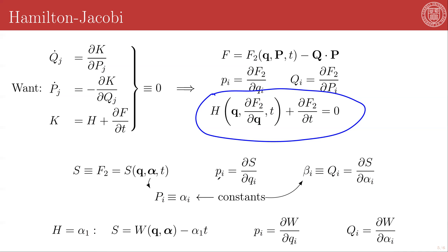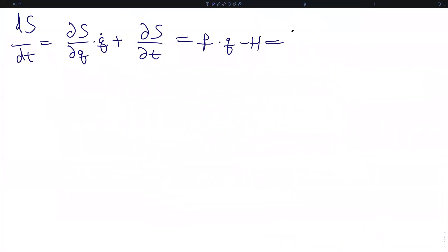As before, the original conjugate momenta are partials of our generating function S with respect to the original generalized coordinates, and our transformed generalized coordinates, the new constants called betas, are partials of that same S function with respect to the alpha constants. The Hamilton-Jacobi formulation maps the n second-order ordinary differential equations of the original system to the 2n first-order ODEs of the Hamiltonian approach, and further to a single first-order differential equation. Furthermore, the time derivative of S equals the original conjugate momenta dotted into the original generalized coordinates minus the original Hamiltonian, which is the Lagrangian. So S is the action.